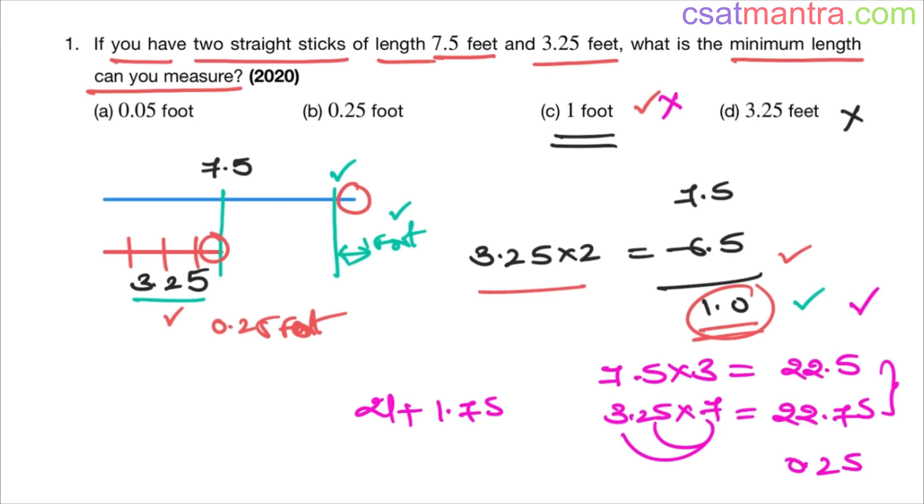So 1 cannot be our answer. If you got this idea then it's well and fine. If not, this will not be complicated. You are multiplying 7.5 with 2 and 3, and 3.25 with something, and checking their difference: are we getting less than 1 or not? Yes, we got less than 1.